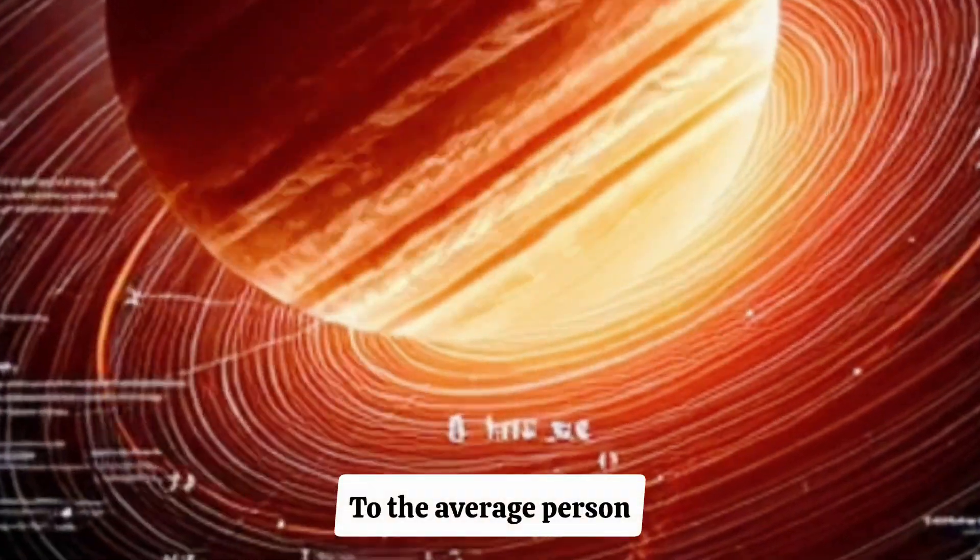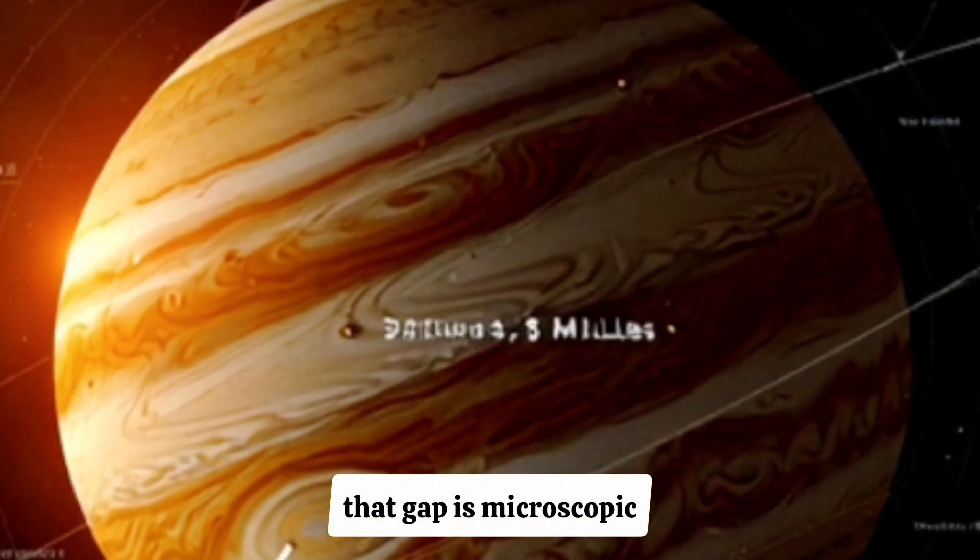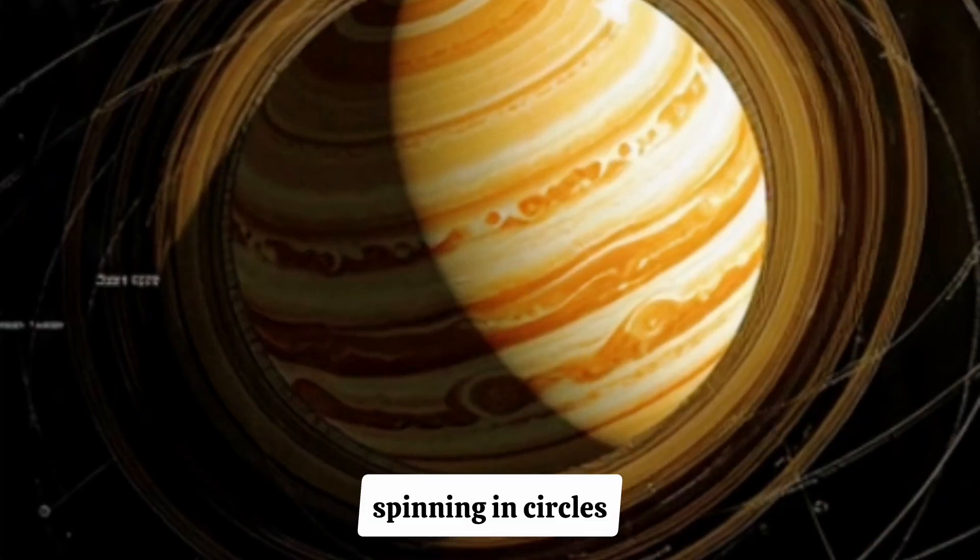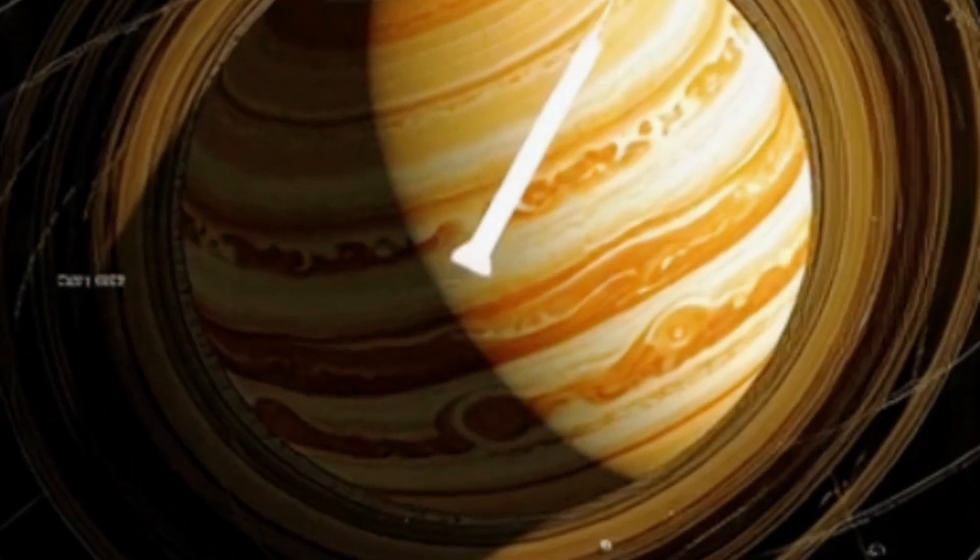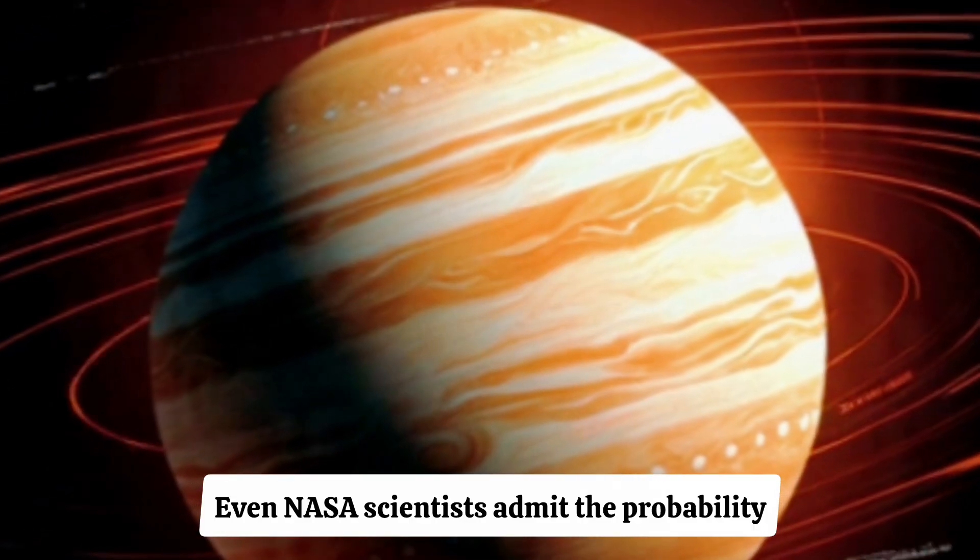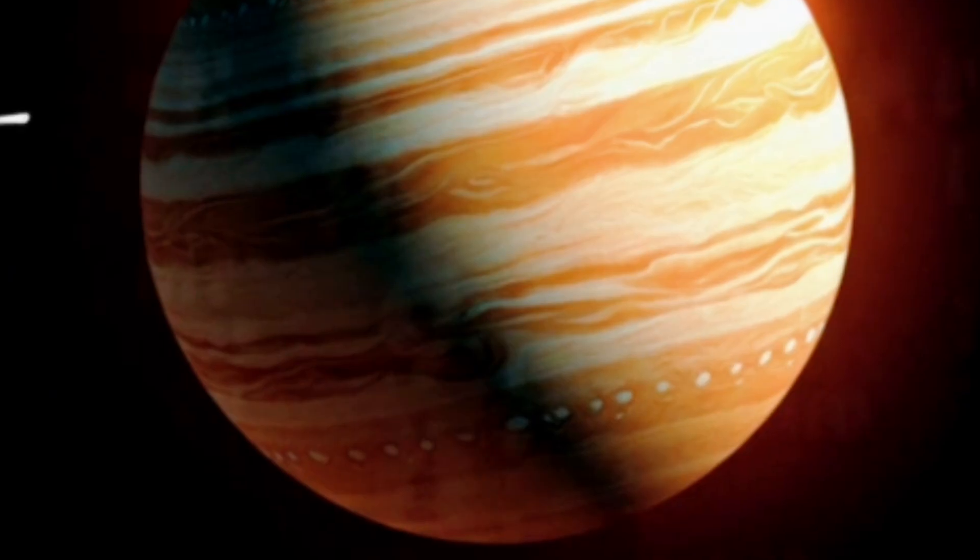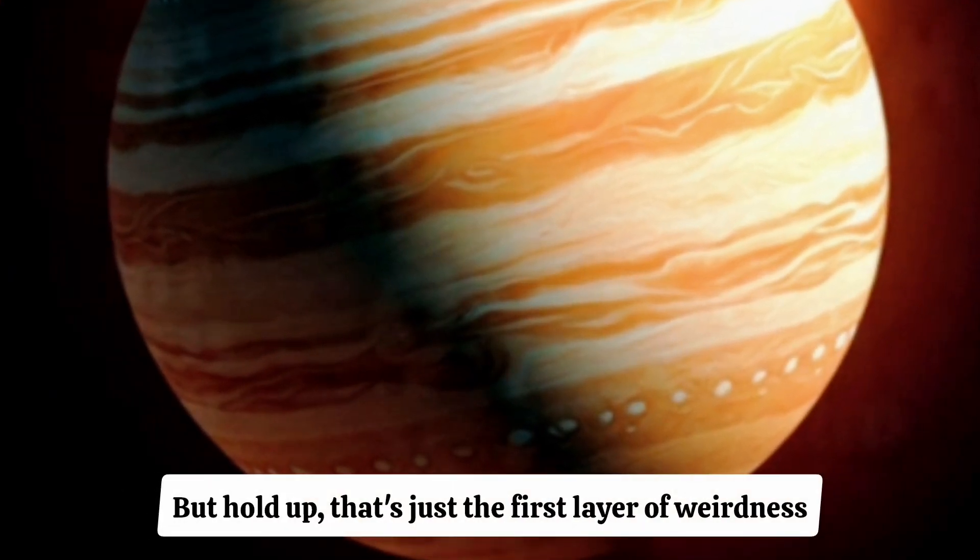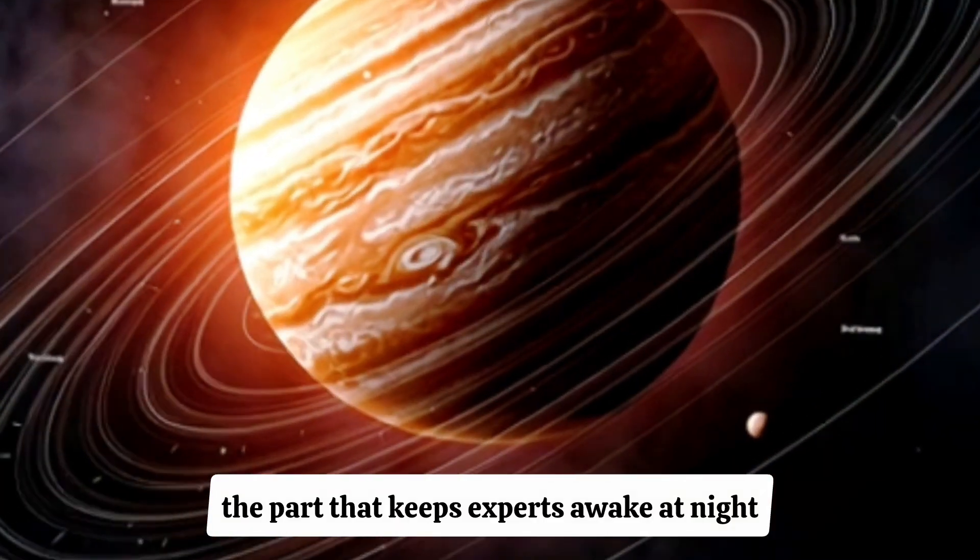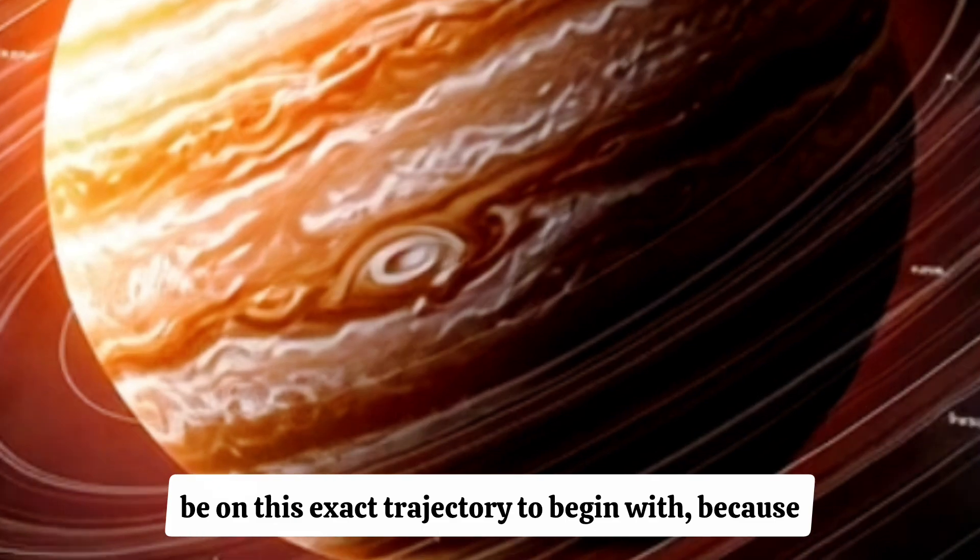To the average person, that number means nothing. But in astronomical calculations, that gap is microscopic. It's like firing a missile from Los Angeles, blindfolded, spinning in circles, and still landing it within 0.1% of the target on the other side of the country. Even NASA scientists admit the probability of this happening by pure accident is less than 0.004%.